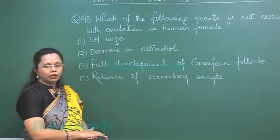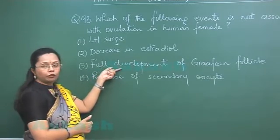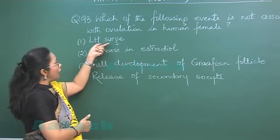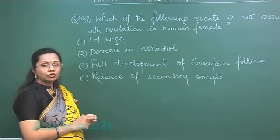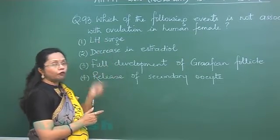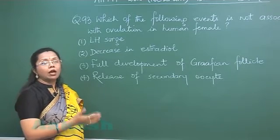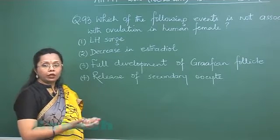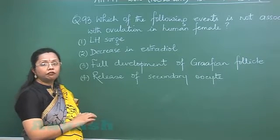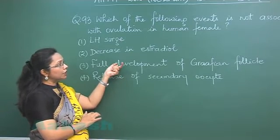The full development of the Graafian follicle coincides with the LH surge. The LH surge occurs because the mature follicle releases a huge amount of estrogens — one of the most potent being estradiol — and this gives positive feedback to LH secretion.